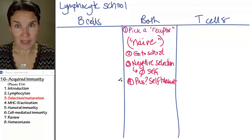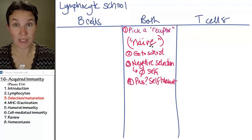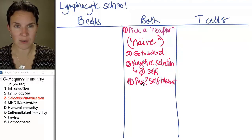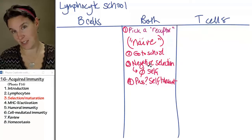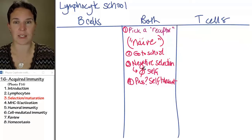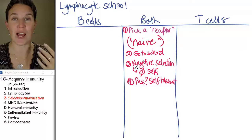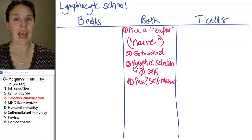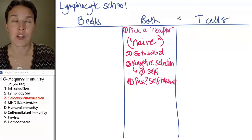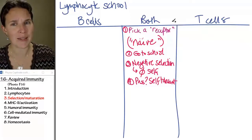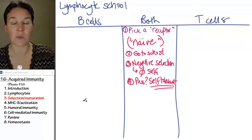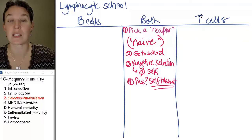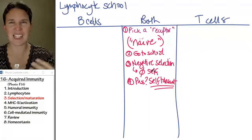95% of naïve lymphocytes fail negative selection. They don't go through necrosis — they go through apoptosis. They have to commit controlled cell suicide. If you don't pass this class, you're done. You picked a bad receptor. So there's only a 5% pass rate, and those that pass are self-tolerant. This happens with both B and T cells.